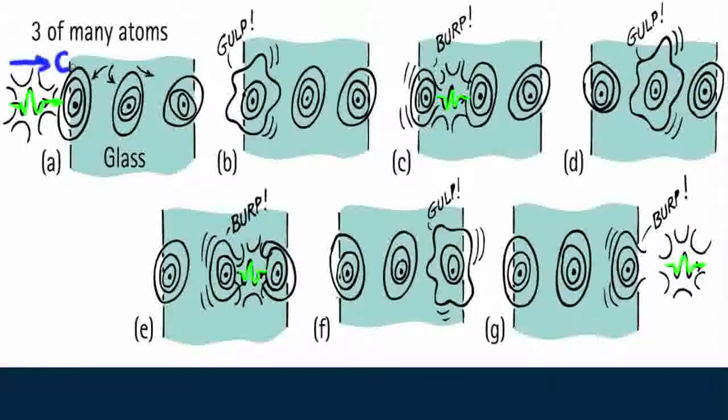Wait a minute. Light travels slower in glass than in air? Haven't we learned that light travels at a constant speed c? Now here's an interesting point.